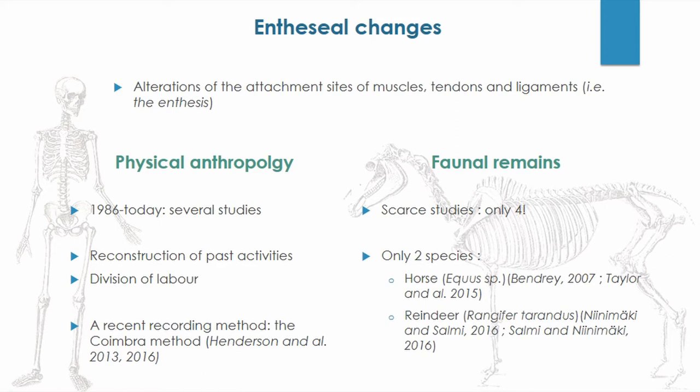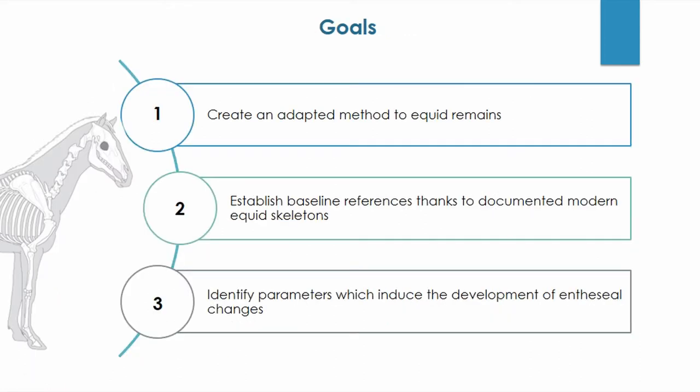Several methods were created in order to study these modifications, and the most recent one is the Coimbra method. This kind of analysis of faunal remains is unfortunately much less common, with only four publications: two dedicated to the horse and two others to the reindeer. Because of the lack of studies and the importance of horses in human societies, we propose to analyze enthesial changes in equid remains.